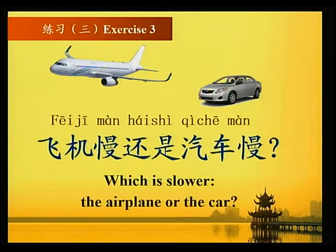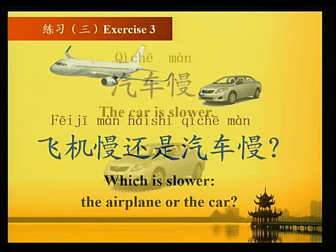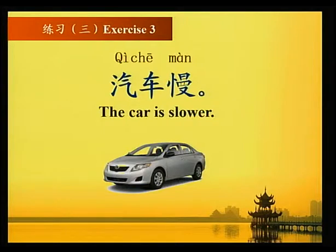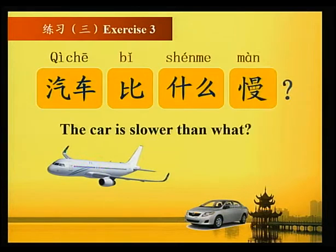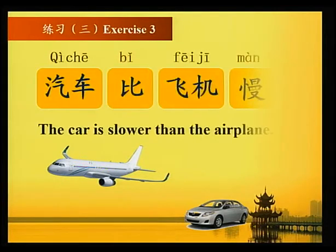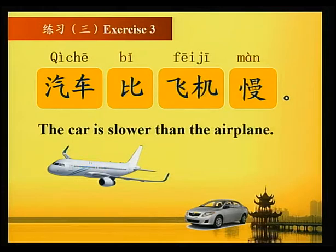飞机慢还是汽车慢？Which is slower, the airplane or the car? 汽车慢 — the car is slower. 汽车比飞机慢 — the car is slower than the airplane.